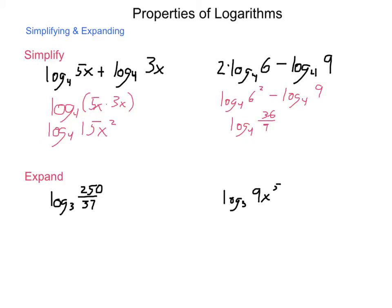36 divided by 9 is 4, so log base 4 of 4. Now, what power do you raise 4 to to get an answer of 4? And the answer is 1. So 2 log base 4 of 6 minus log base 4 of 9 simplifies out to 1 because we are able to apply the properties of logarithms.